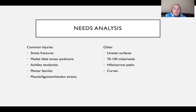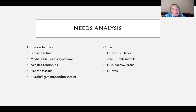They run about 70 to 100 miles per week during the season for a collegiate level cross-country runner, and this is between practices and meets.